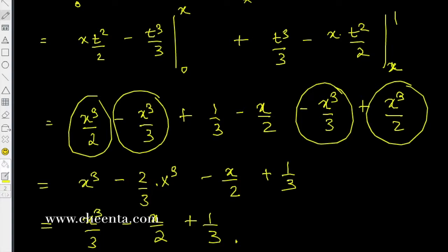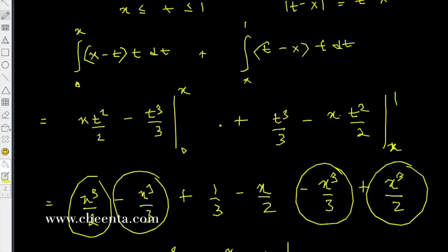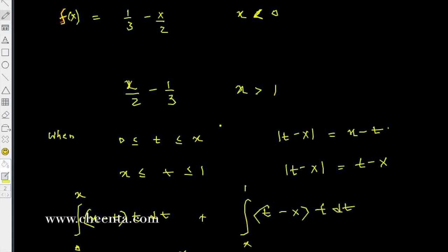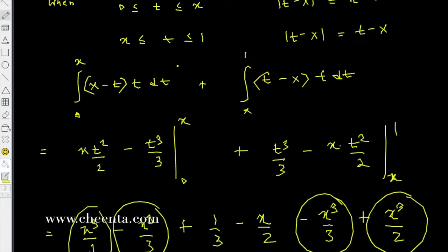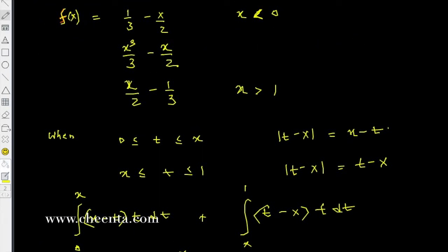This is simply x cubed by 3 minus x by 2 plus 1 third. So that's the value of f(x) between 0 and 1. Let's complete the description of our function: this is x cubed by 3 minus x by 2 plus 1 third when x is between 0 and 1.